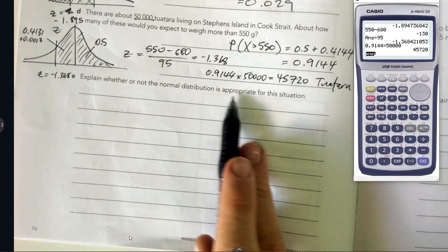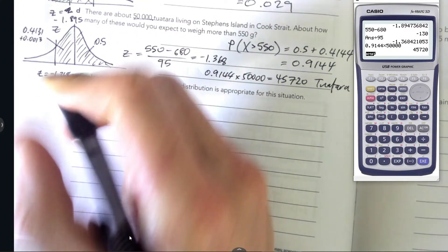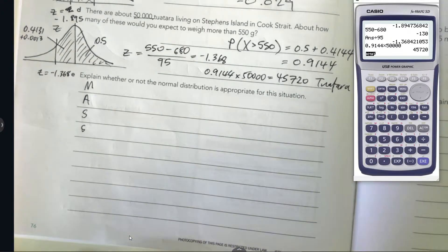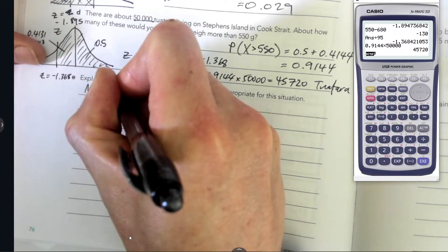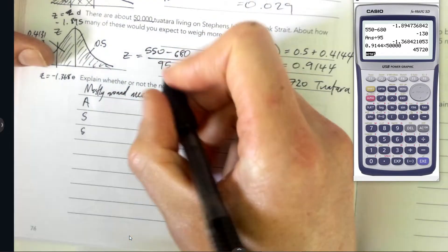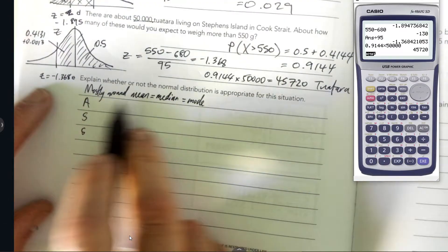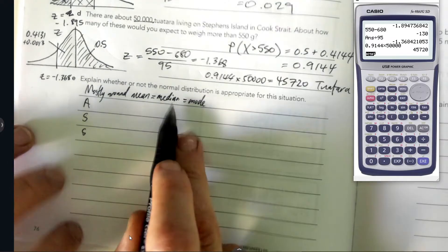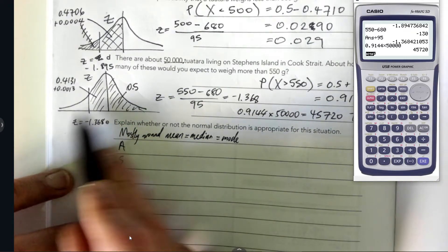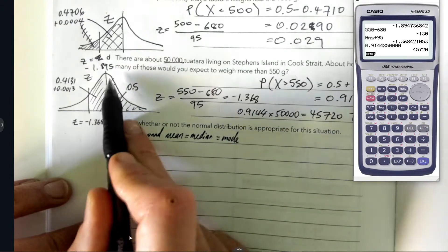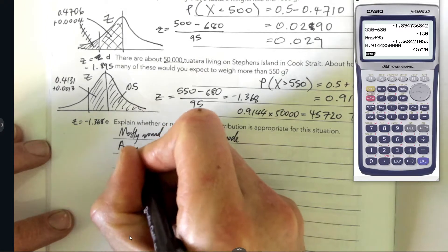Explain whether or not the normal distribution is appropriate for this situation. Remember MASS. You're going to need to learn a mnemonic for these things. The M is mostly around mean. So it's all the M's: mean, which is the median, which is the mode. Whenever you're dealing with a normal distribution, it's mostly around the mean, which is the median, which is the mode. Everything is mostly around that for a normal distribution.